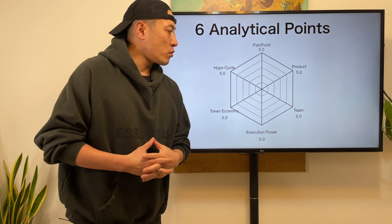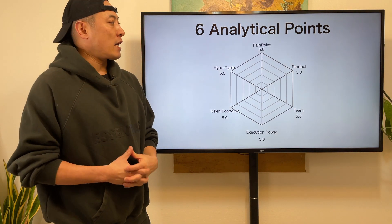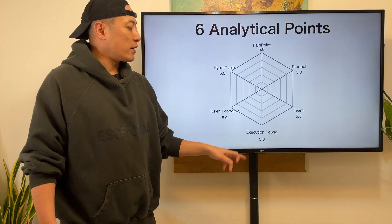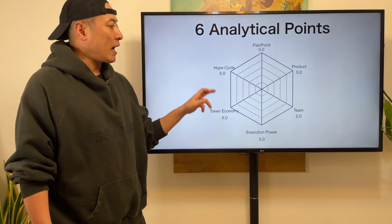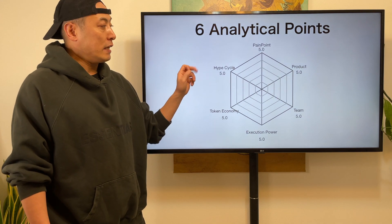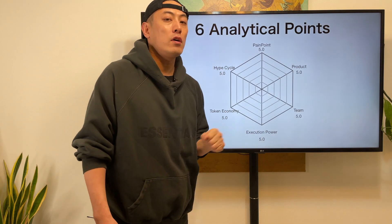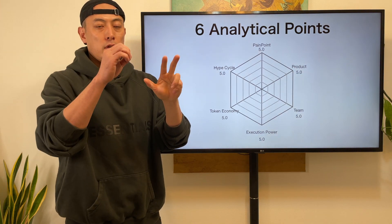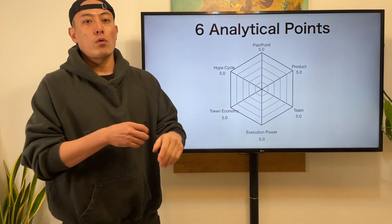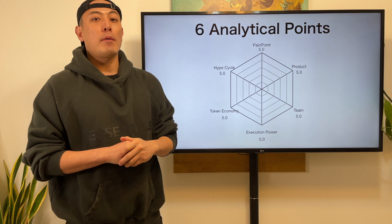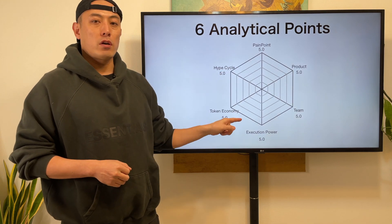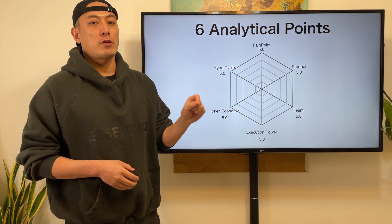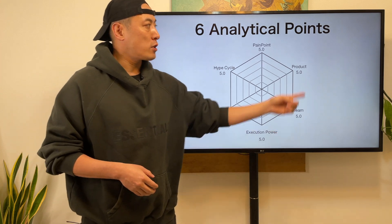As usual, I'm going to apply the 6 analysis points, starting with pain points, products, team, execution power, token economy, and hype cycle. For each, I set a 5.0 point maximum, so the total score is 30. If you want to deepen your understanding about how I analyze each point, please check out my other video about my Altcoin Investment Strategy.